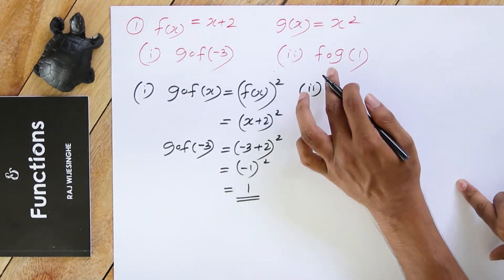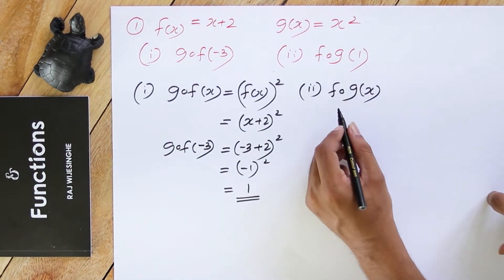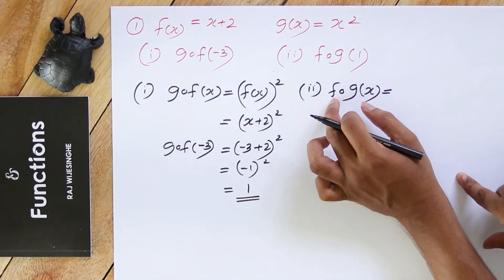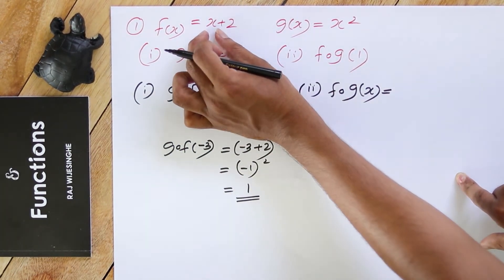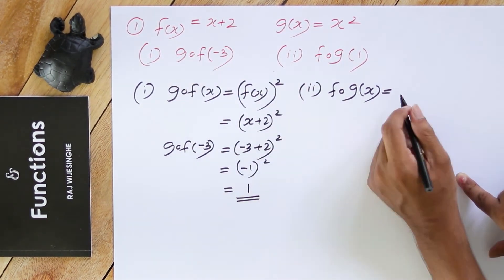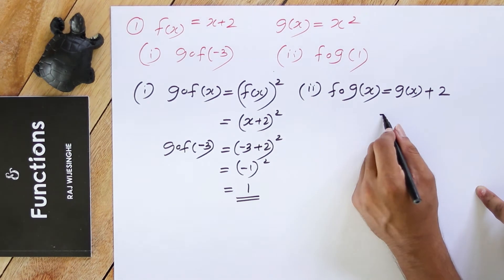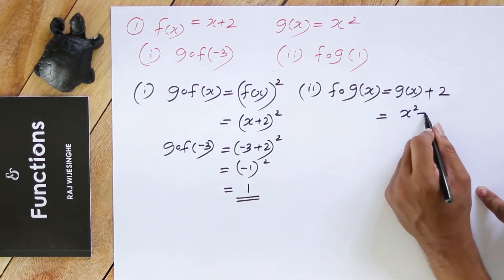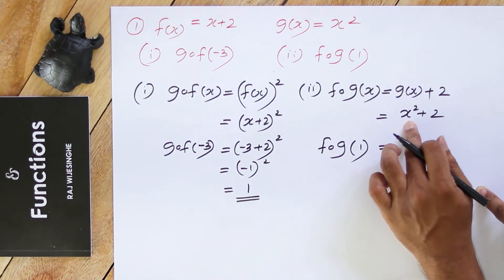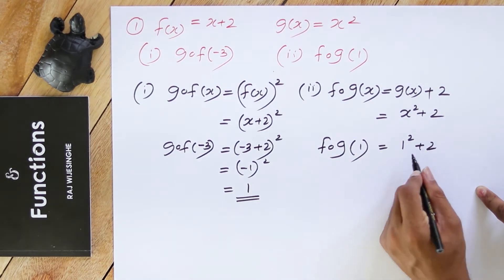Roman number 2: f∘g(1). Before we find f∘g(1), we must find f∘g(x), which means g(x) should be substituted inside f(x). f(x) is x plus 2, so instead of x we write g(x), giving g(x) plus 2. g(x) is x squared, so it is x squared plus 2. Now for f∘g(1), x is substituted by 1: 1 squared plus 2, so the answer is 3.